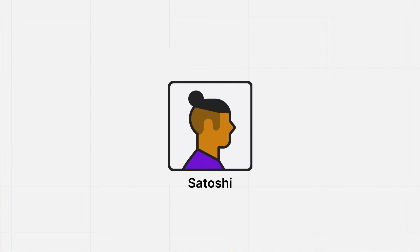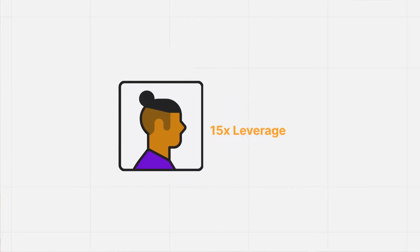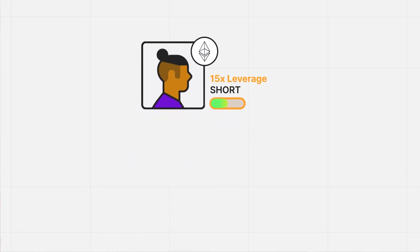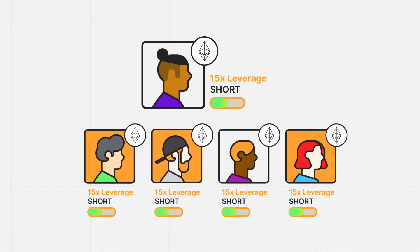For example, let's say you're following a master trader nicknamed Satoshi. Satoshi decides to open up a 15x leveraged short position on Ethereum. Through copy trading, all of Satoshi's followers will open up the same position with their chosen amount of funds. When Satoshi chooses to close out the position, all of their followers' positions will close out as well.